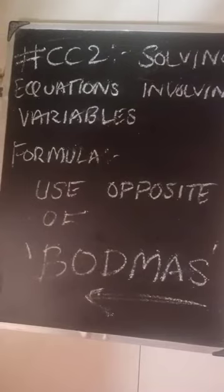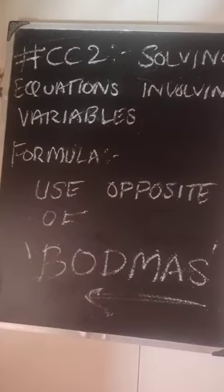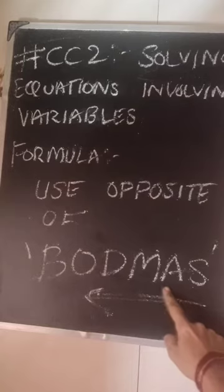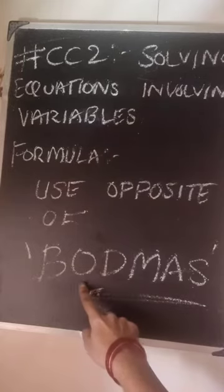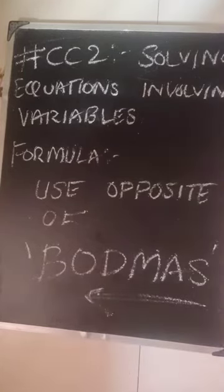Today's common confusion which we are going to address is solving equations involving variables like x, y and all. When we have equations, we get confused what to do first. The simple formula is use opposite of BODMAS. When we are solving algebraic expressions, we are using BODMAS. But when we are trying to solve equations involving variables, just use the opposite of BODMAS. That is you start from subtraction, then go to addition, then multiplication, then division, and then finally the brackets.